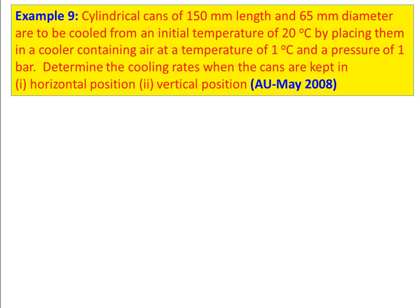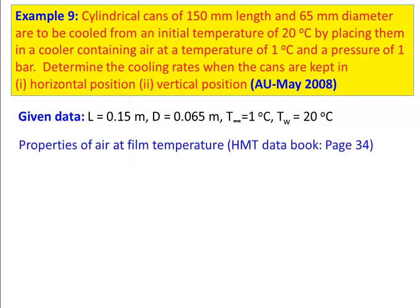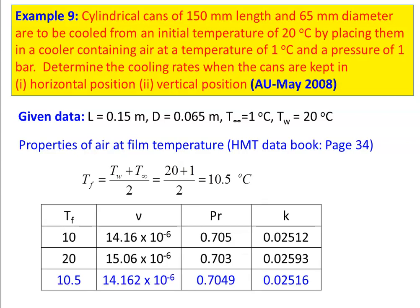Example 9: A cylindrical can of 150 mm length and 65 mm diameter is to be cooled from an initial temperature of 20°C by placing it in a cooler containing air at 1°C at a pressure of 1 bar. Determine the cooling rate when the cans are kept in horizontal and vertical positions. Length = 0.15 m, diameter = 0.065 m, fluid temperature = 1°C, surface temperature = 20°C.